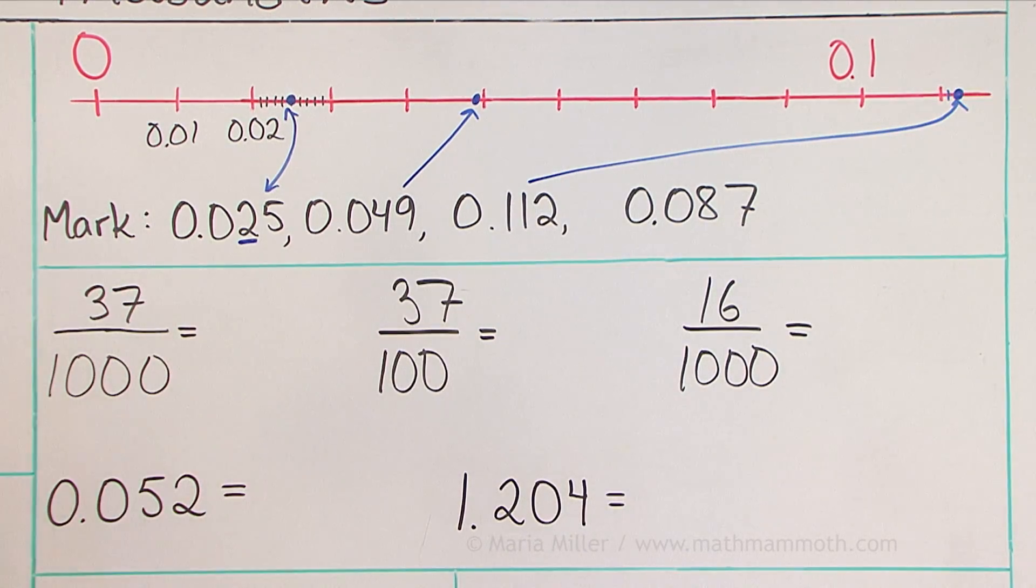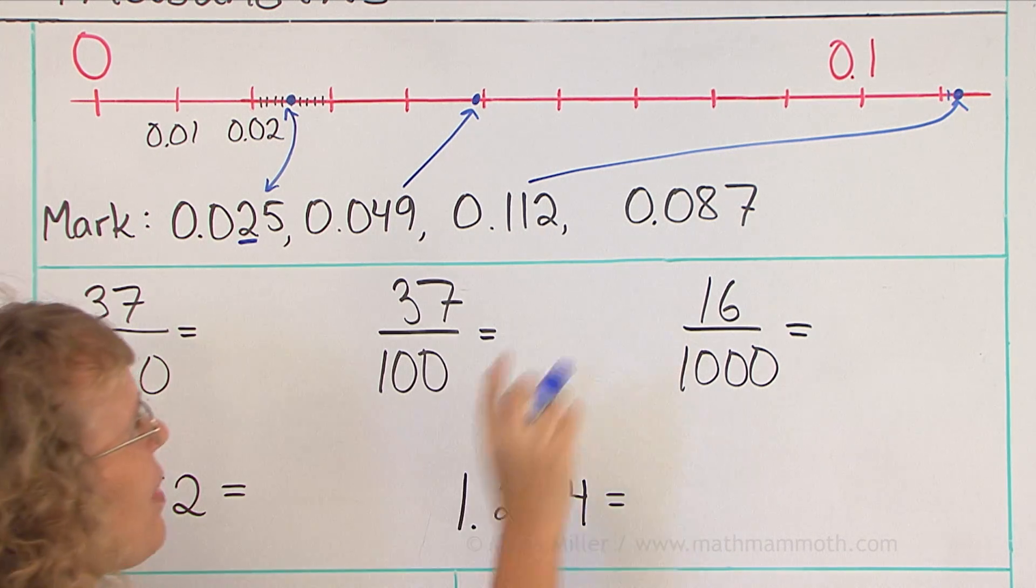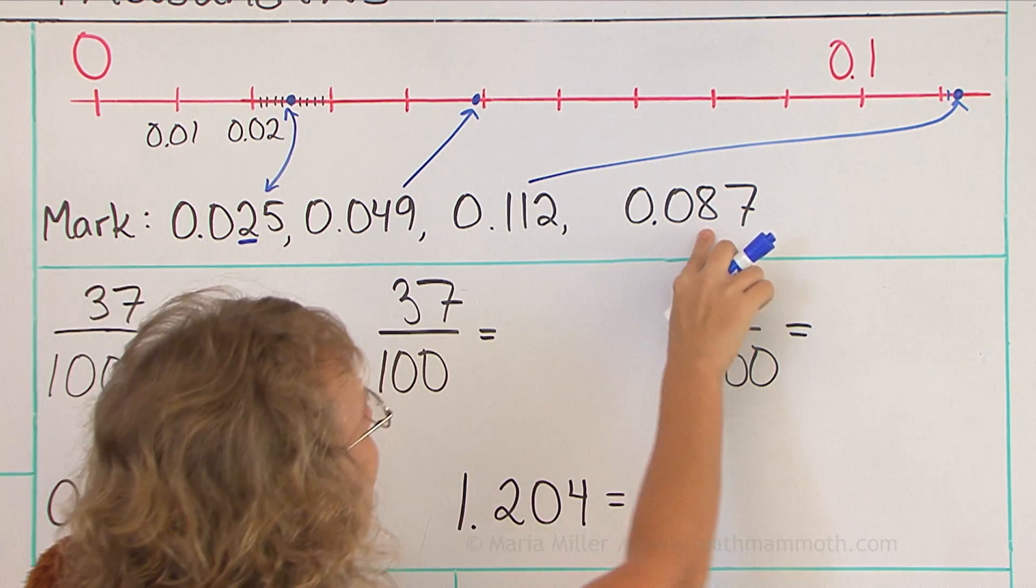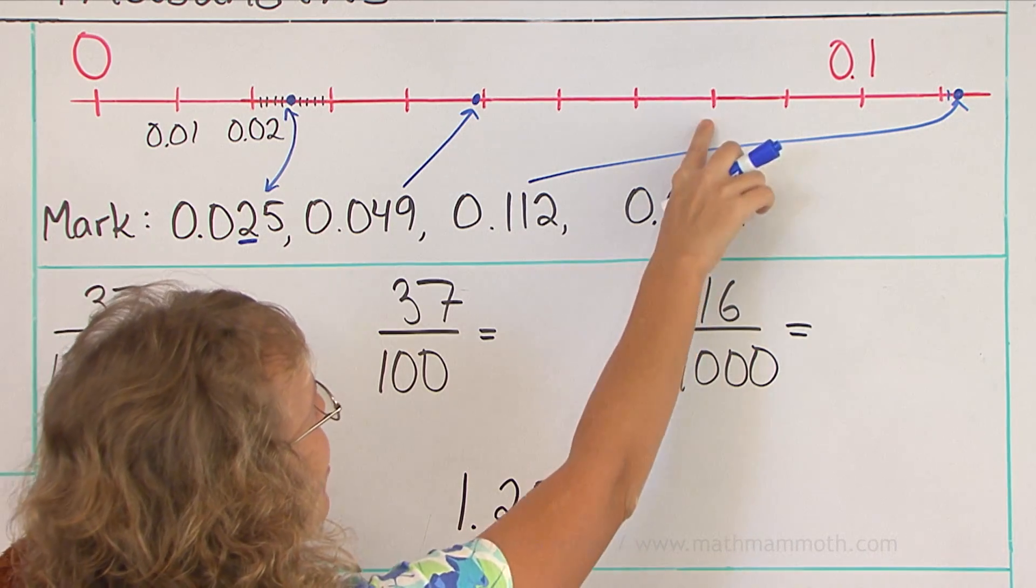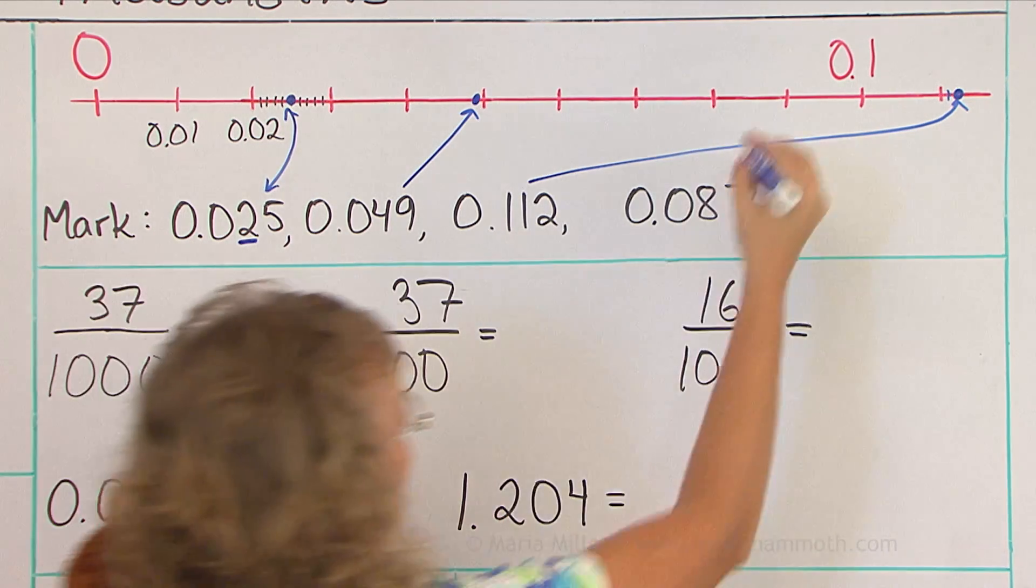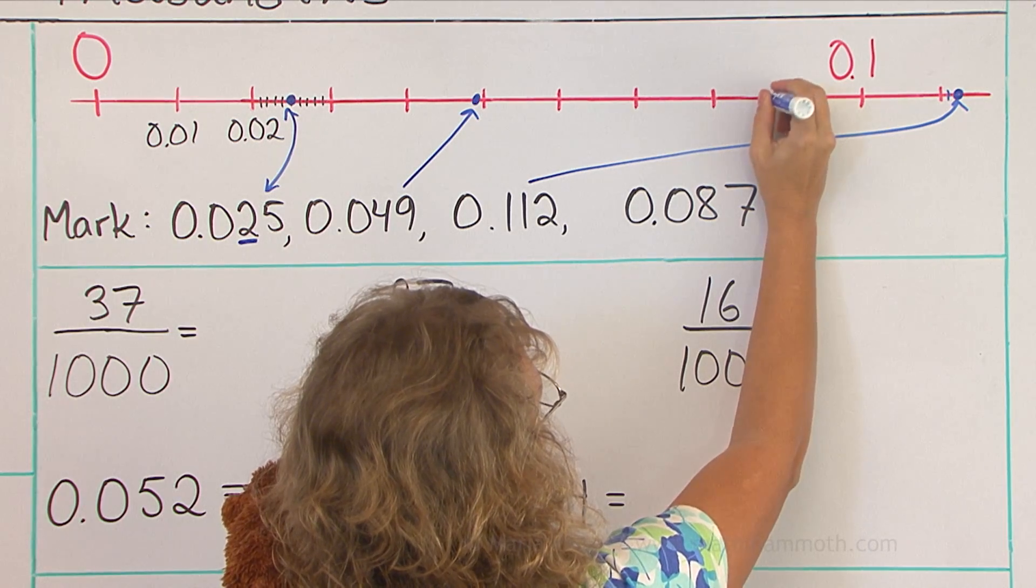And the last one, can you tell? Eighty-seven-thousandths. But I will first find eight-hundredths, which is here. And then imagine those little lines and go to the seventh one. Somewhere there.